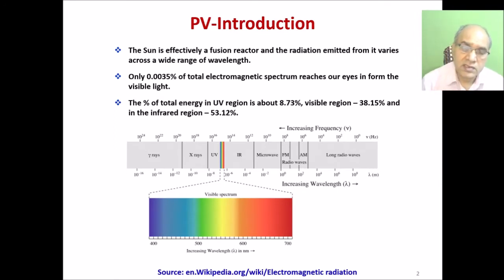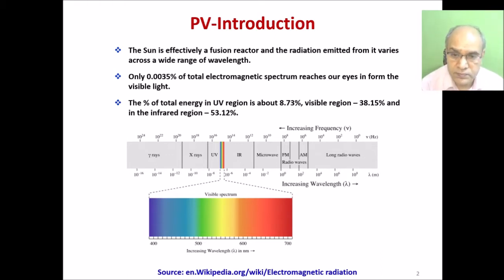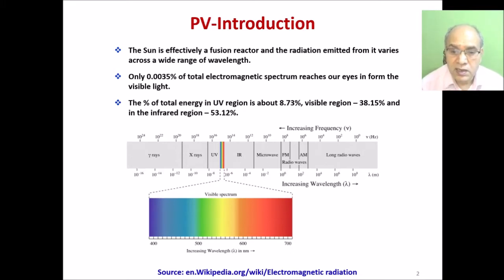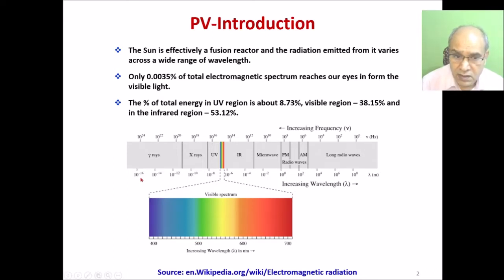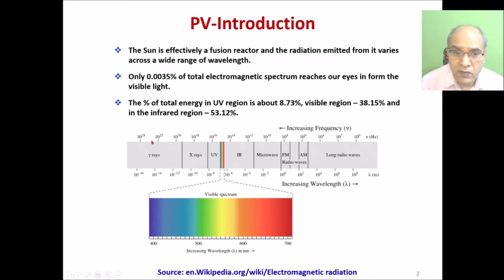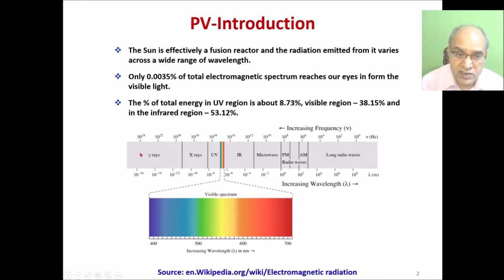Light is the essential source for PV units to generate electricity, and it is also essential for life on Earth. The sun is basically a fusion reactor, and the radiation coming from the sun in emission form varies across a wide range of wavelengths. Looking at the electromagnetic spectrum, it varies from 10 to the power of minus 16 to 10 to the power of 8 meters of wavelength, and the frequency is from 10 to the power of 14 down to 1 hertz for long radio waves, while for gamma rays the frequency is very high.